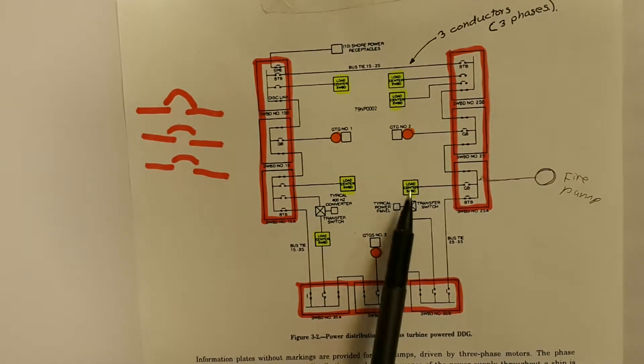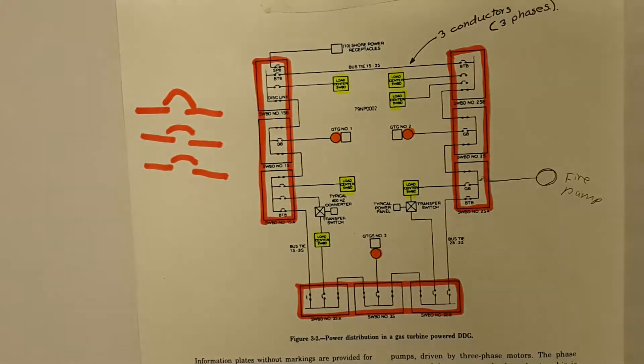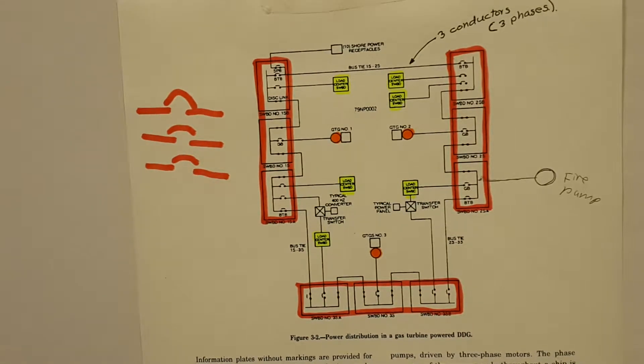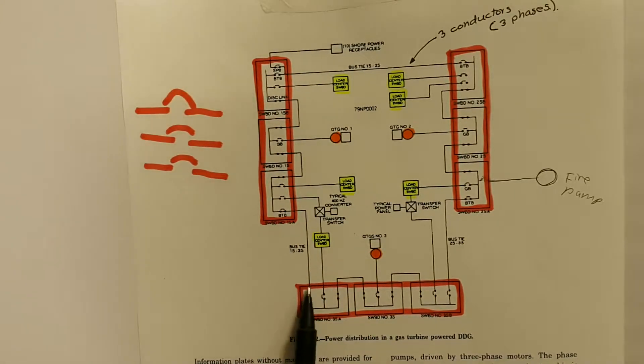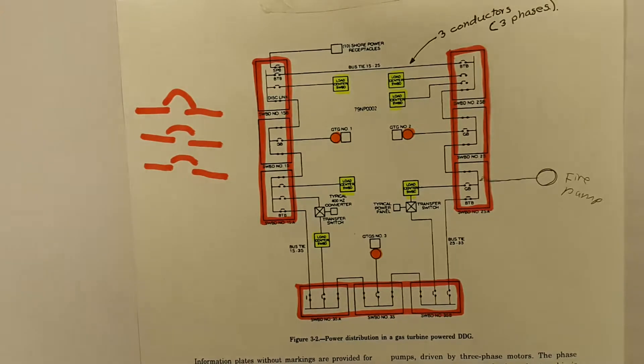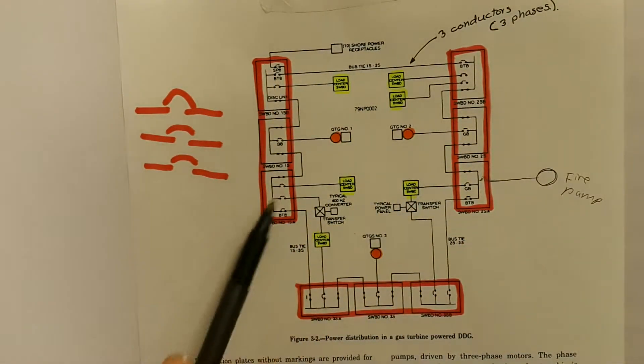Load centers have a lot of small breakers or medium-size breakers that feed independent loads, power panels, and equipment. Here we also have a bus tie and another bus tie over here. If all of them are closed, that's what is called a closed bell loop.